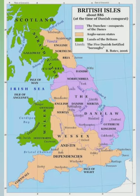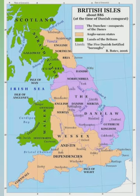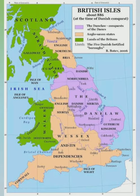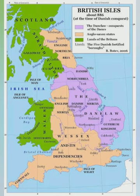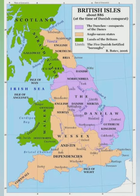Latin moneta, pondo, and uncia (M-O-N-E-T-A, P-O-N-D-O, U-N-C-I-A) were also taken over as commercial terms. Old English minet meaning coin is now mint; Old English pond (P-O-N-D) is now pound; Old English ynce (Y-N-C-E) is now inch. Other Latin words connected with commerce and travel include mile and anchor.